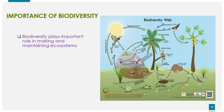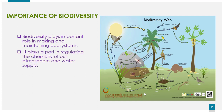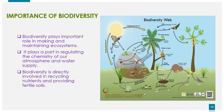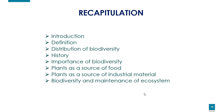Biodiversity also plays an important role in maintaining ecosystems, because biodiversity helps maintain ecosystems. Our water and different chemicals are regulated through biodiversity through what we call biogeochemical cycles, which regulate the flow of materials between organisms and the environment.